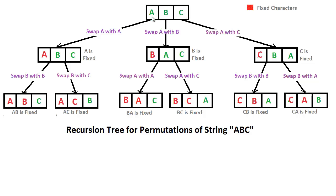Whenever you start with this kind of a problem, the first thing you take is the first character. What I do is take this string and swap a with a. Then we do swap a with b, then swap a with c. With these three steps we can achieve the fact that a, b, and c are each starting the string. For a three-character string you have three factorial — which is six — number of strings that can be generated.